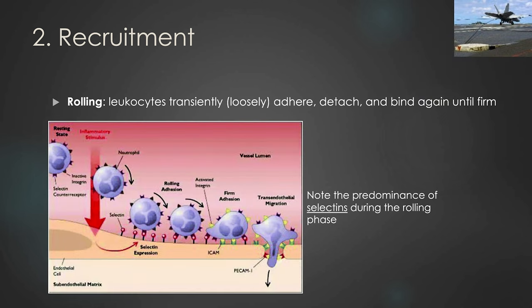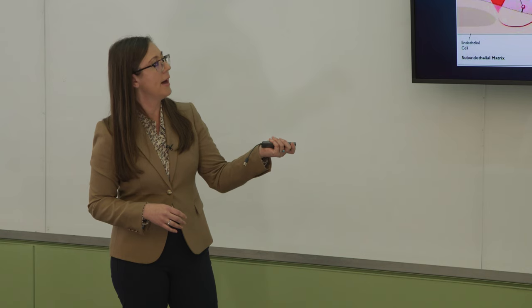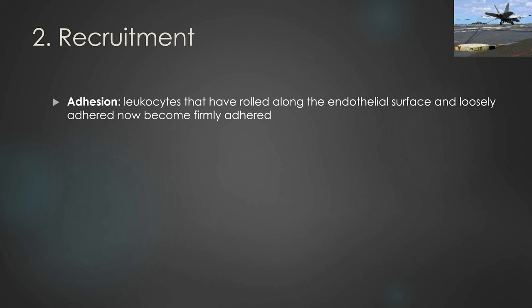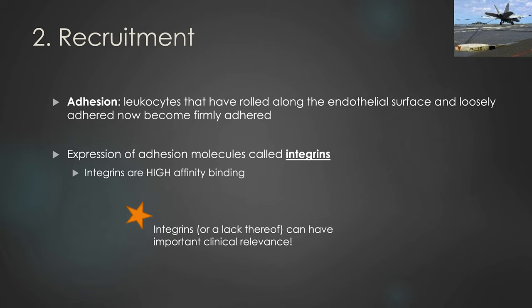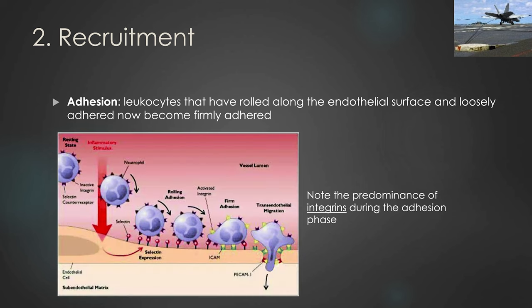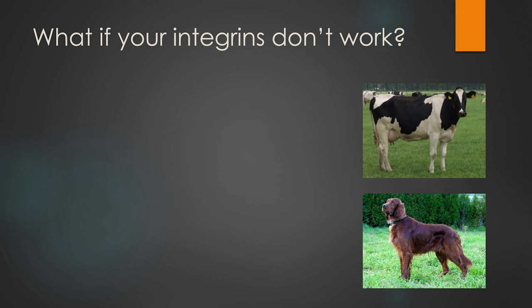At some point we need firm adhesion, because the white blood cell has to come to a complete stop before it can exit the blood vessel. That's where integrins come in. Integrins — aptly named — integrate between cells and are high-affinity binding molecules. Think of them as the arresting cable that firmly stops a fighter jet landing on an aircraft carrier. Notice in the diagram the predominance of integrins that will firmly stop that white blood cell and allow it to migrate to the site of injury.